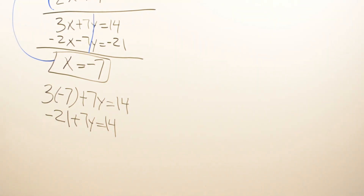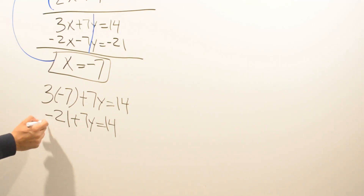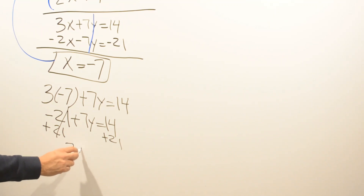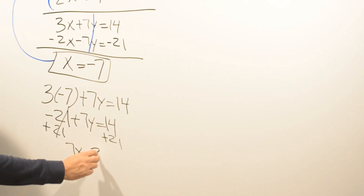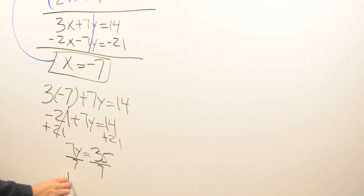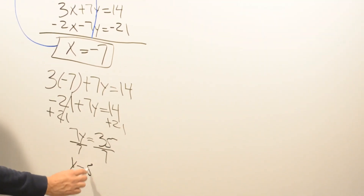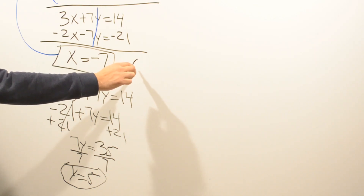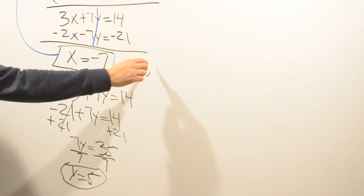This becomes a two-step equation. 3 times negative 7 is negative 21, so we have negative 21 plus 7y equals 14. Add 21 to both sides — it cancels — giving 7y equals 35. Divide both sides by 7, and we get y equals 5. So the answer for Example 1 is x equals negative 7 and y equals 5.